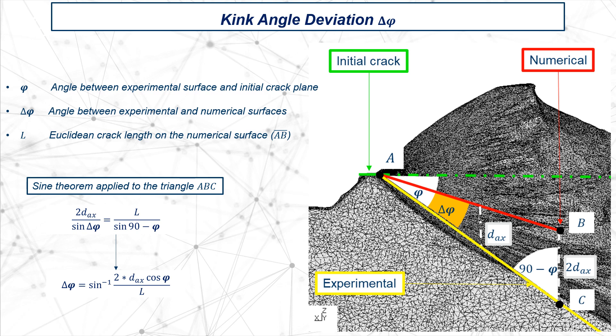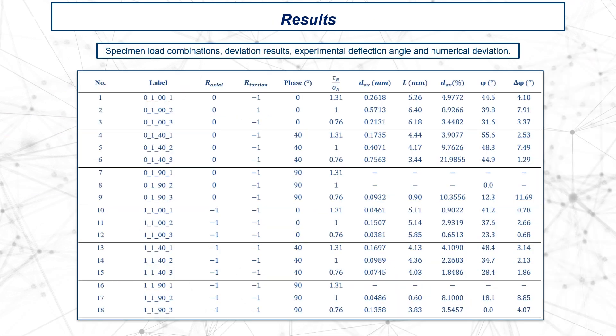Another parameter used to evaluate the accuracy of the numerical propagation is the kink angle deviation between numerical and experimental surfaces. As it can be seen in the picture, delta phi represents the experimental and numerical kink angles. It is calculated according to the formula here reported, obtained by applying the sine theorem to the triangle ABC. In this, d_ax represents the deviation along the axial direction, and d instead is the Euclidean distance between points A and B. This table summarizes the comparisons between numerical predictions and experimental tests. For each test, it is reported the loading conditions and the results in terms of deviation along axial direction, length of the numerical propagation, kink angle and kink angle deviation.